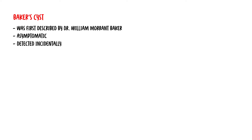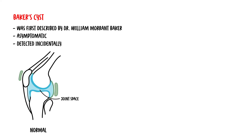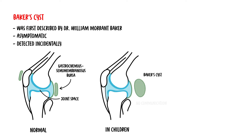Baker's cysts were first described by Dr. William Morant Baker. Most cysts are asymptomatic, so they don't have symptoms, and are detected incidentally by an imaging study performed for some other reason. The cyst is actually an enlarged gastrocnemius semimembranosus bursa, located between the gastrocnemius muscle. The bursa, or cyst, can be either communicating with the synovial fluid or not. In children, there is no communication, and the Baker's cysts arise strictly from the bursa.